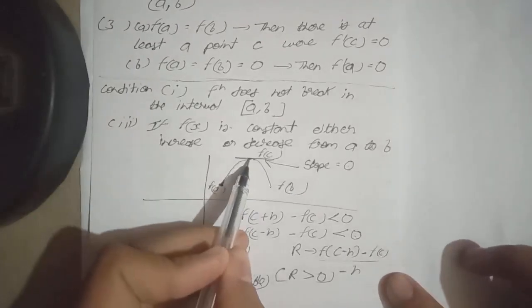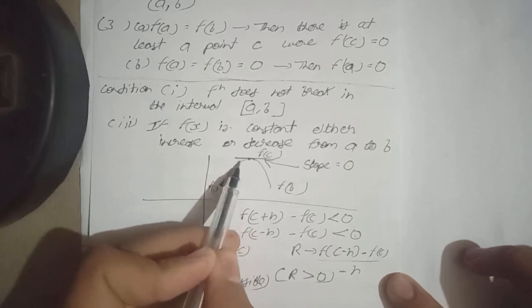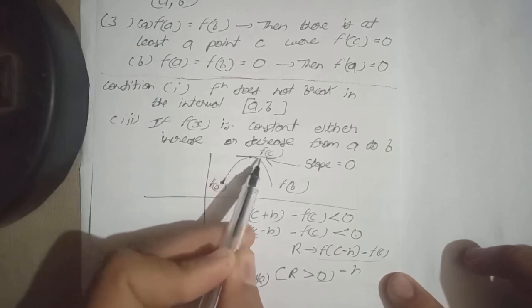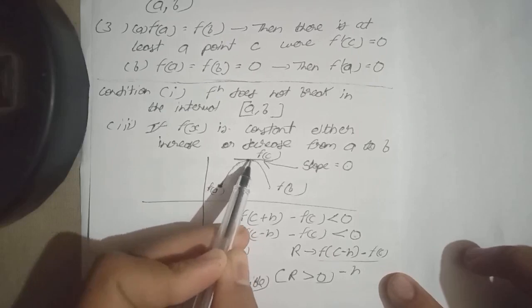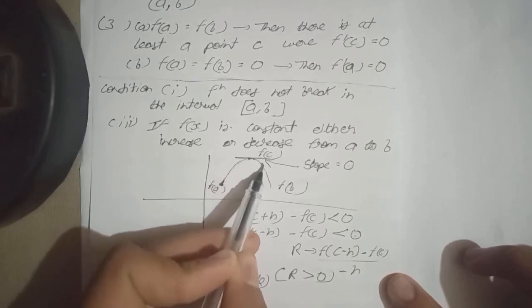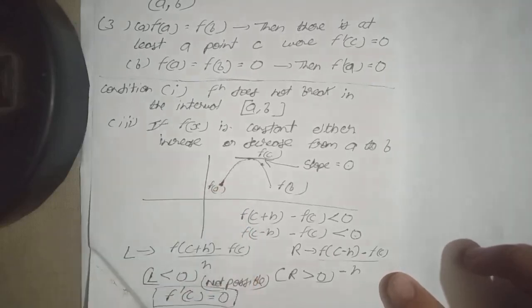Agar mai is point ke left side me koi value loonga to bhi woh is point se kami hoogi, aur agar mai is point ke right side me koi value leta hoong to bhi woh f(c) se to kami hooga.